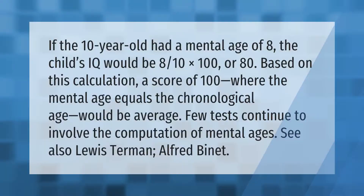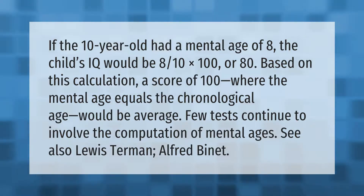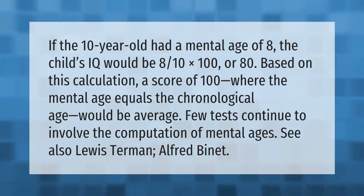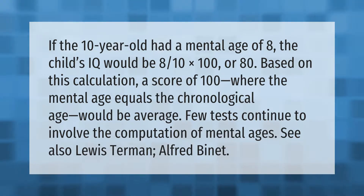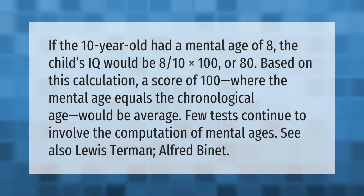If the 10-year-old had a mental age of eight, the child's IQ would be eight-tenths times 100, or 80. Based on this calculation, a score of 100 — where the mental age equals the chronological age — would be average. Few tests continue to involve the computation of mental ages. See also Lewis Terman and Alfred Binet.